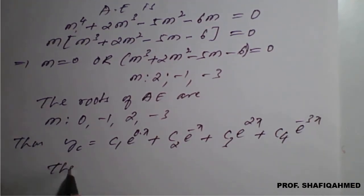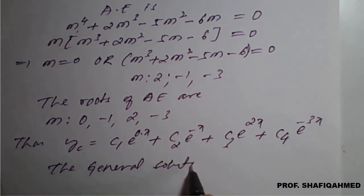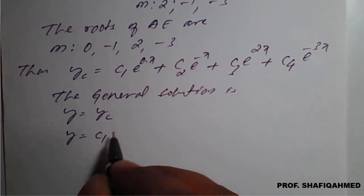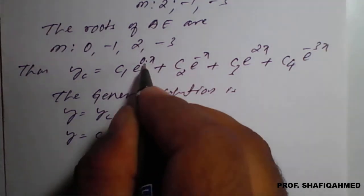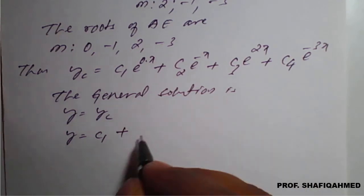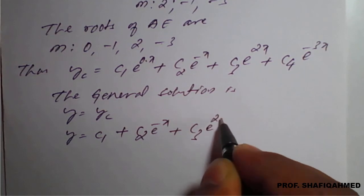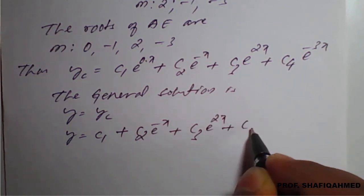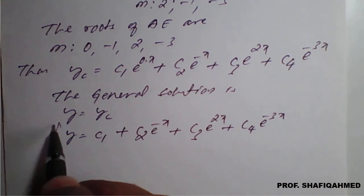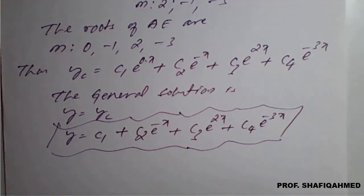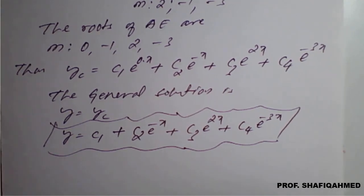The general solution is y equals yc, which is y equals c₁ (e^0 is 1, leave it) plus c₂e^(-x) + c₃e^(2x) + c₄e^(-3x). This is the required general solution of the given homogeneous differential equation.